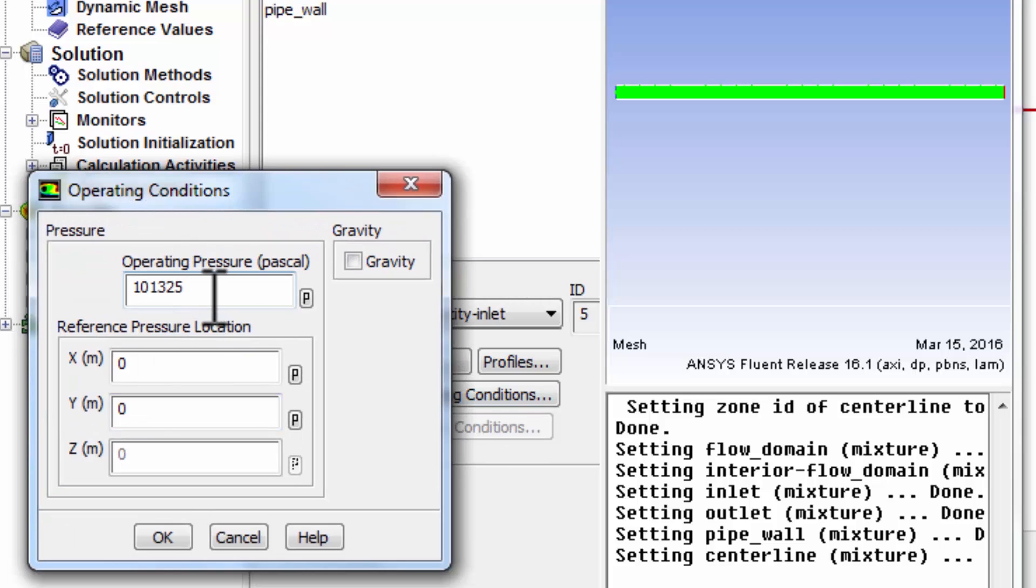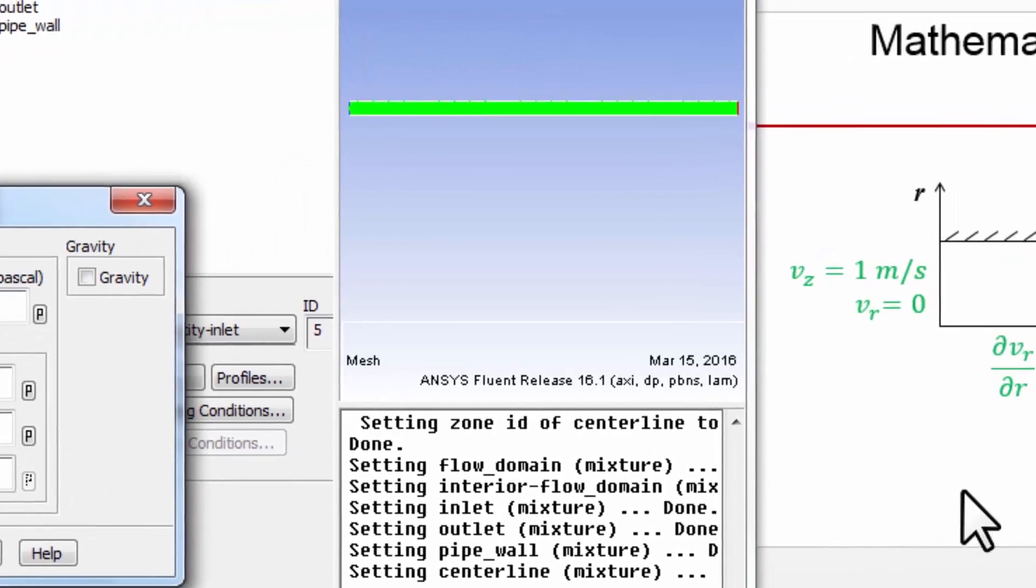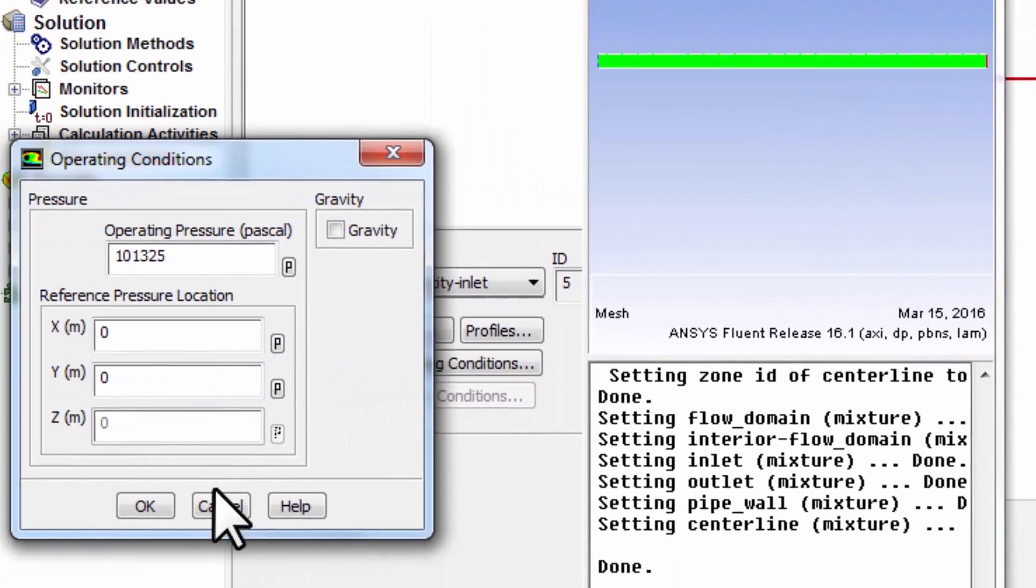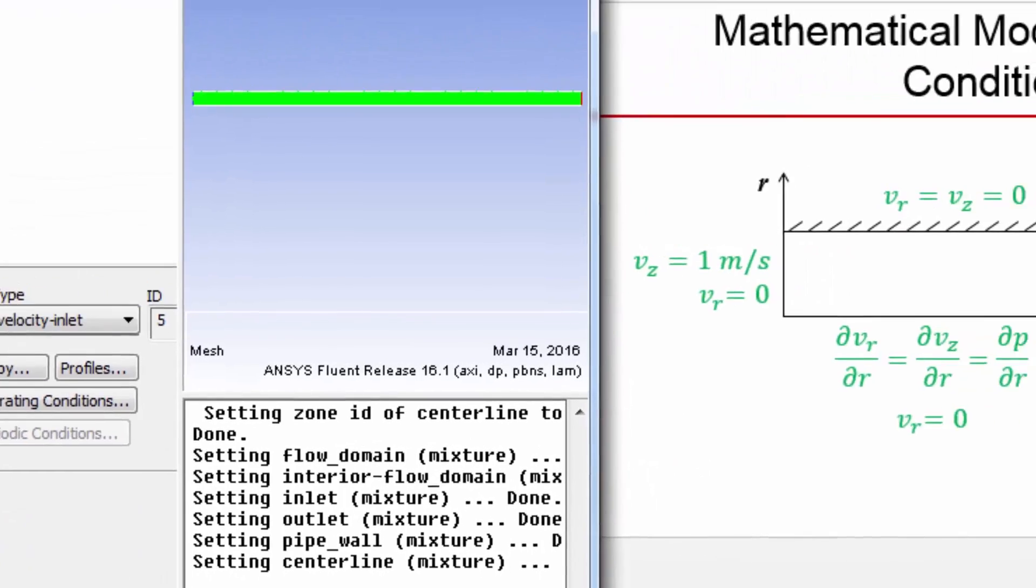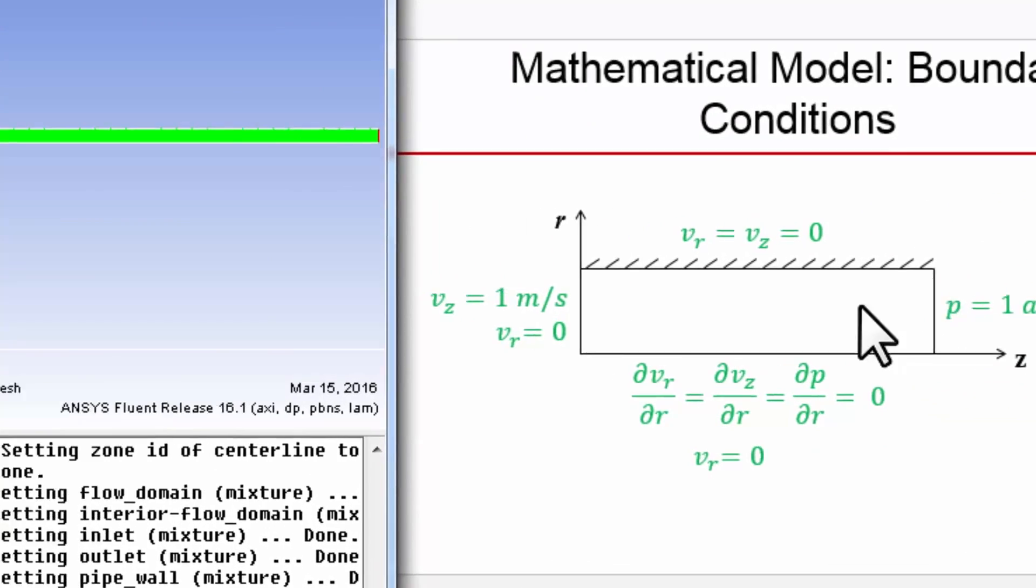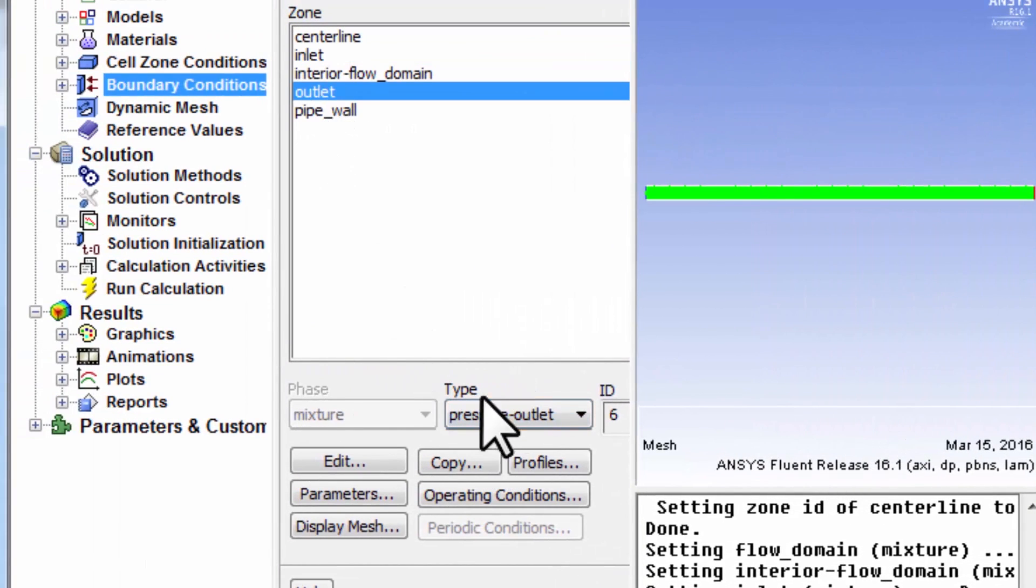That's one atmosphere, equal to one atmosphere in Pascals. So essentially we have set the absolute pressure to be one atmosphere as the initial guess at the inlet. Let's go to the outlet and set the boundary condition there. Pick outlet.